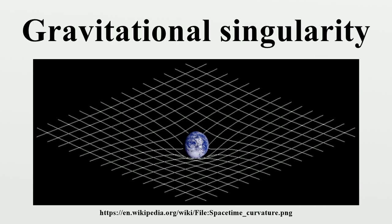A gravitational singularity or space-time singularity is a location where the quantities that are used to measure the gravitational field of a celestial body become infinite in a way that does not depend on the coordinate system. These quantities are the scalar invariant curvatures of space-time, which includes a measure of the density of matter.